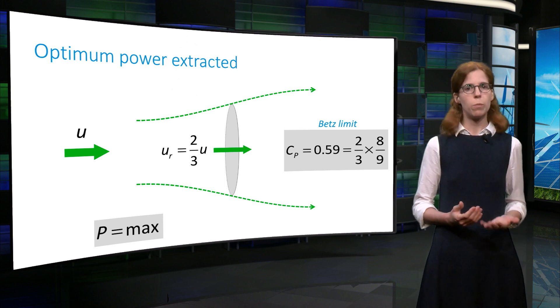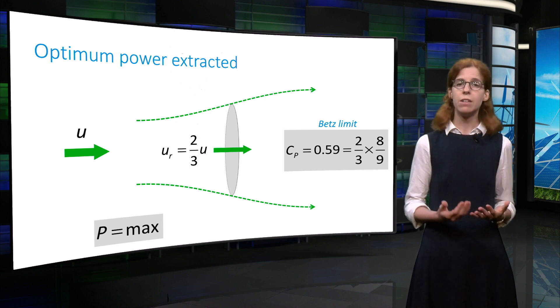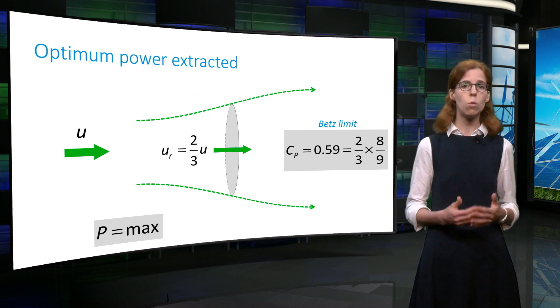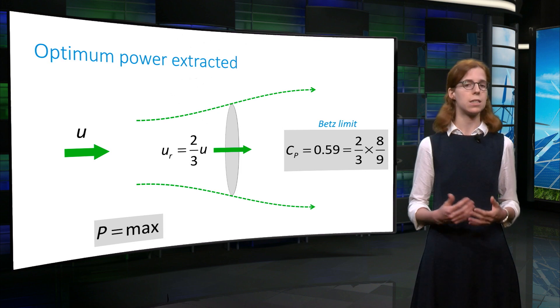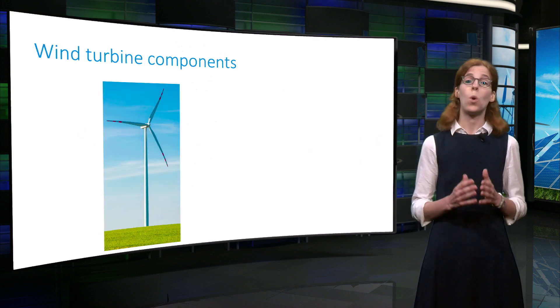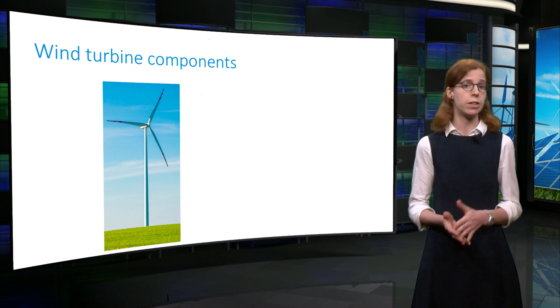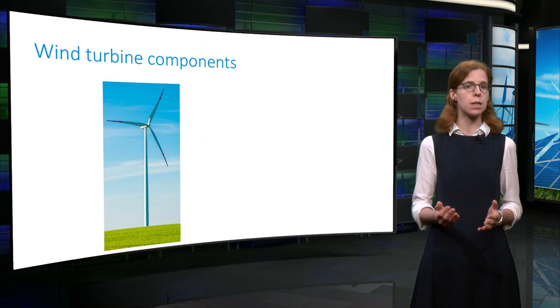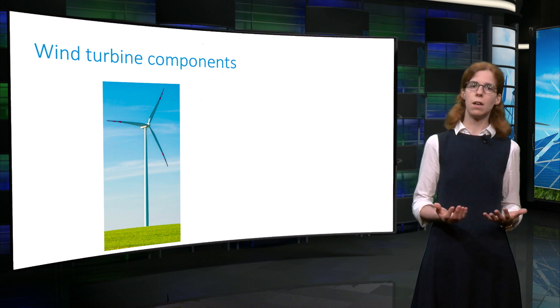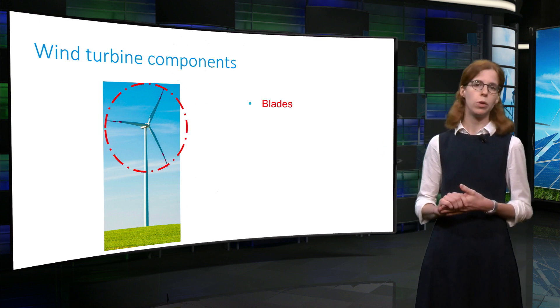Although this model represents a very simple approximation of a wind turbine rotor, it is an effective way of describing the global effect that the wind flow has on the rotor. Of course, more advanced models are needed to account for the fact that wind turbines have more complex geometries than a simple disk. In particular, a wind turbine is composed of blades, usually two or three.